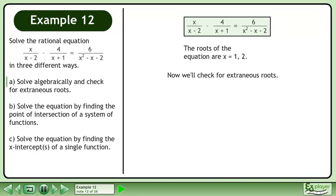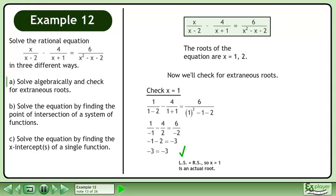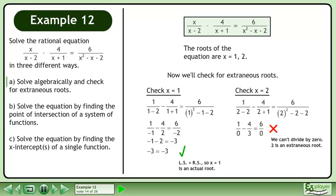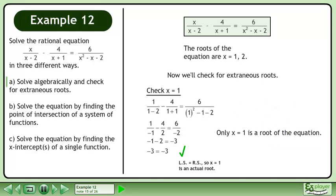Now we'll check for extraneous roots. Check x equals 1. The left side equals the right side, so x equals 1 is an actual root. Now check x equals 2. We can't divide by 0, so 2 is an extraneous root. Only x equals 1 is the root of the equation.